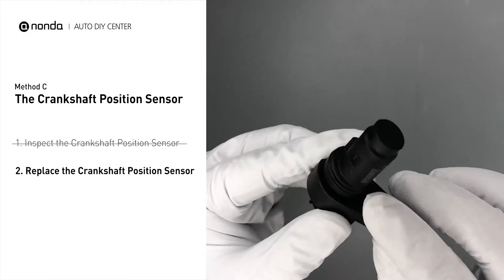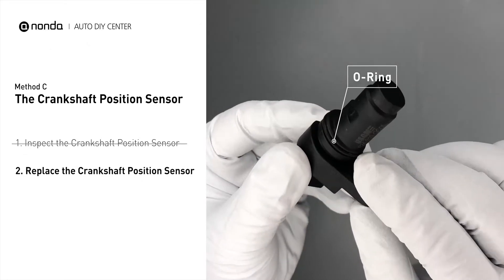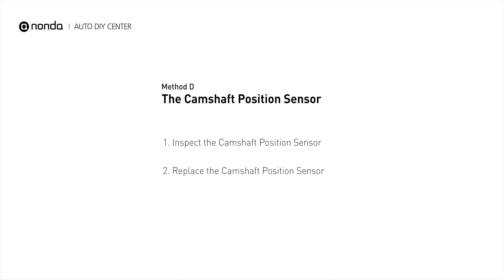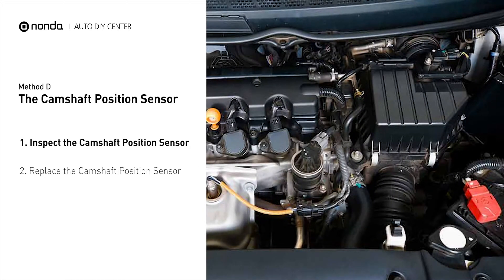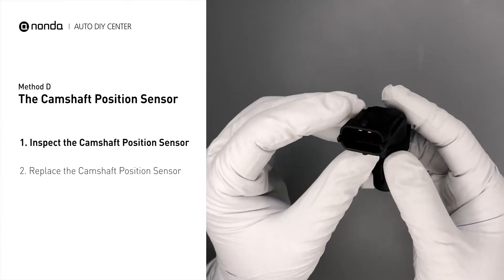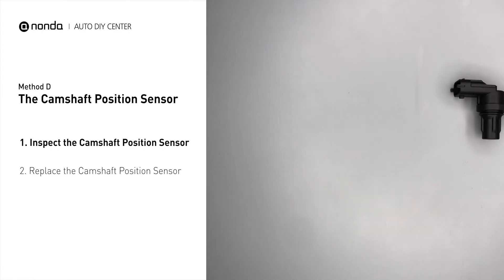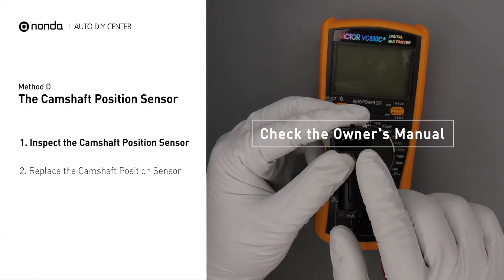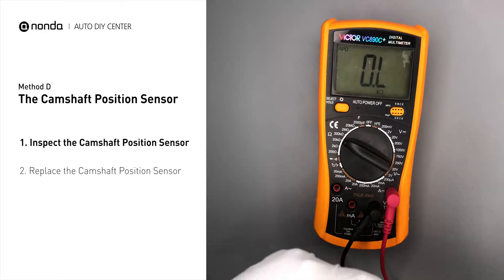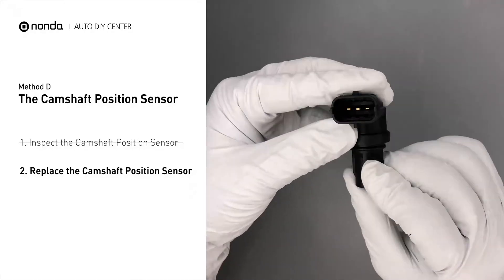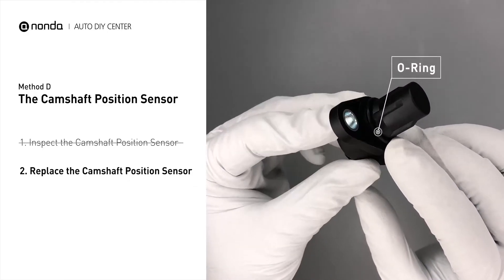Check to make sure the O-ring from the sensor hasn't fallen into its hole, then replace it with a new camshaft position sensor. Method D – The Crankshaft Position Sensor. The crankshaft position sensor is most often located on the front underside of the engine and can usually be found mounted to the timing cover. First, carefully remove the crankshaft position sensor from the vehicle. If you do not get a reading, this indicates that the crankshaft position sensor is faulty and needs to be replaced. Check to make sure the O-ring from the sensor hasn't fallen into its hole, then replace it with a new crankshaft position sensor.